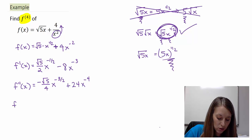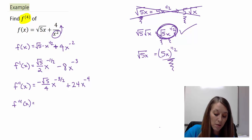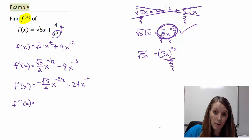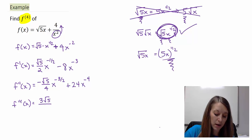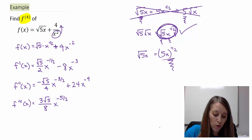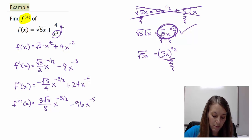Moving on to the third derivative, f triple prime of x. Multiplying the fraction straight across: negative times negative gives positive — I have 3 times square root of 5 in the numerator, keeping the 3 outside and 5 inside the root. In the denominator, 4 times 2 gives 8, and subtracting 1 from the power gives x to the negative five-halves. For the second term: 24 times negative 4 gives negative 96, and x to the negative 5th power.